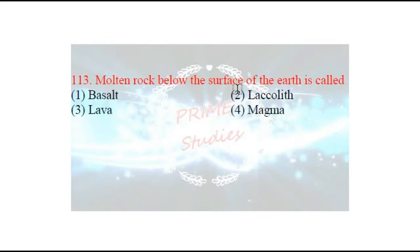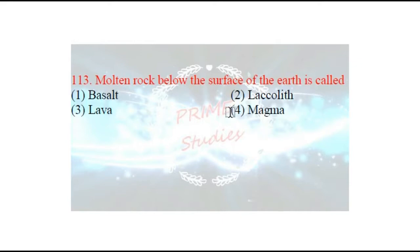Next question: molten rock below the surface of the earth is called what? Prithvi ki surface ke niche jo rocks hoti hain, woh zyada tapman ke karan pigli hui awastha mein hain — usko hum magma bolte hain. Aur jab magma drararon ke through prithvi ki surface ke upar aa jaata hai, toh usko hum lava bolte hain. Aur jab lava jam jaata hai, toh unko hum agni chatanein bolte hain. Right answer: magma.